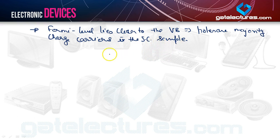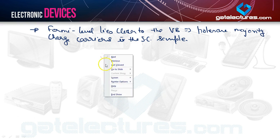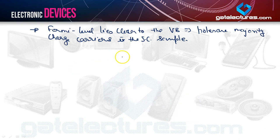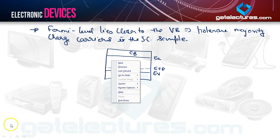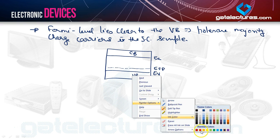At some intermediate temperature between 0 and 300 Kelvin, the Fermi energy level may coincide with the acceptor energy level. Looking at the concentration diagram, E_V is the valence band and E_C the conduction band. The Fermi energy level E_FP is shown in the energy band diagram alongside the distribution curve.